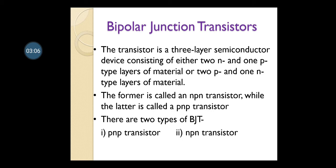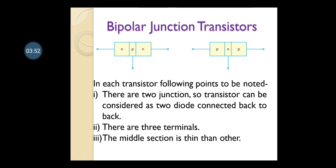Since it is a three-layer device, one junction is formed between the first P and N, and the other junction is formed between N and P — so there are two junctions in a single transistor. For an NPN transistor, where N and P are joined there is one junction, and where P and N are joined there is another junction. That forms the NPN transistor.